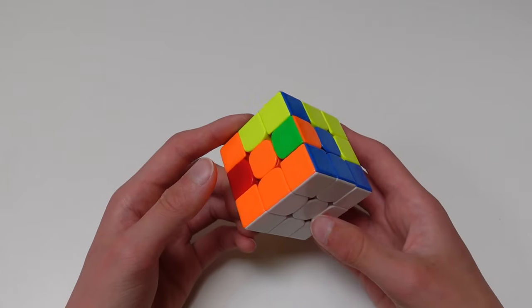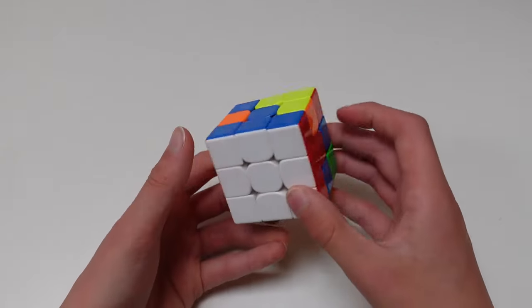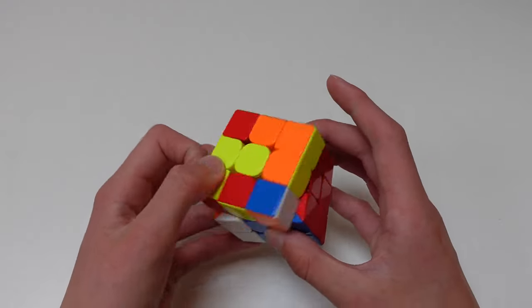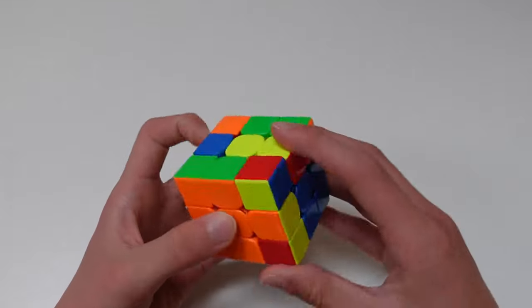Number 1, layer by layer. The layer by layer method is when you solve one layer by making a cross, then filling in the corners, then you solve the four edges in the middle layer, and finally solving the last layer using a few easy steps.